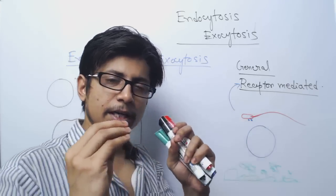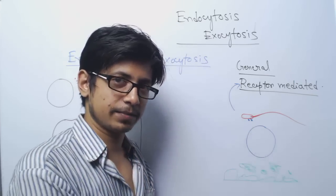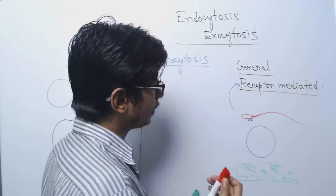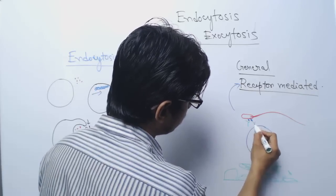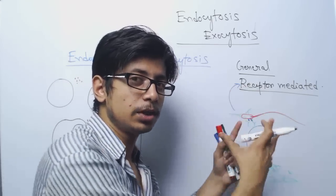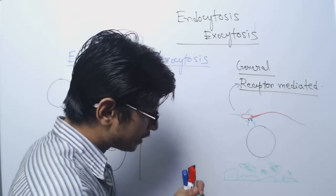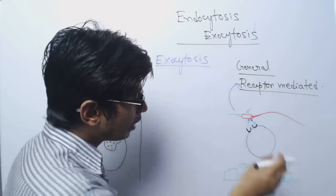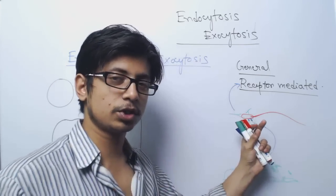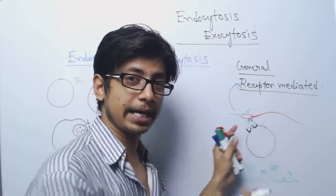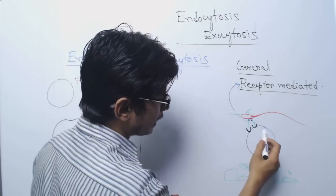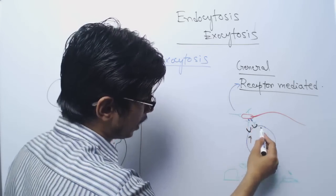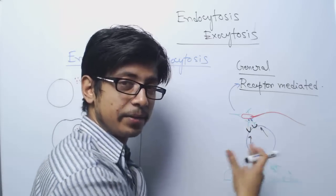On the other hand, bacteria have specific molecules surrounding them which act as antigens for our body. Our body generates an immune response against those antigens by developing antibodies that interact with and surround the bacteria. There are specific receptors present on the surface of the phagocytic cell. When those receptors interact with the antibody-coated bacteria, they signal the cell to slowly rearrange the cytoskeleton, build a kink in the membrane, and engulf the bacteria inside - this is receptor-mediated phagocytosis.